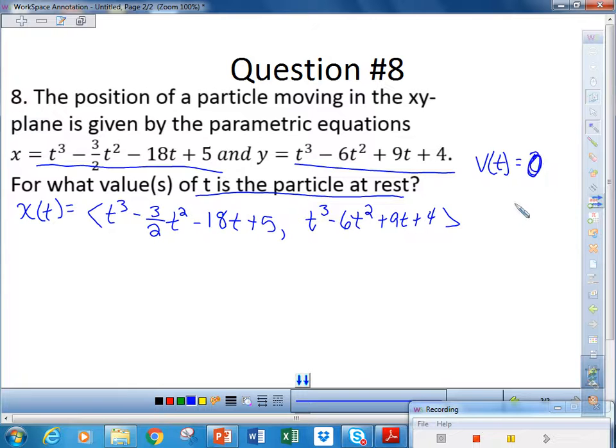So, when is its velocity zero? It may be in our best interest to find the velocity vector. And remember, the velocity vector is just the derivative of the position vector. Now, I'm taking the derivative of both of these and I'm rushing before the bell rings. So, I hope that I did that correctly.